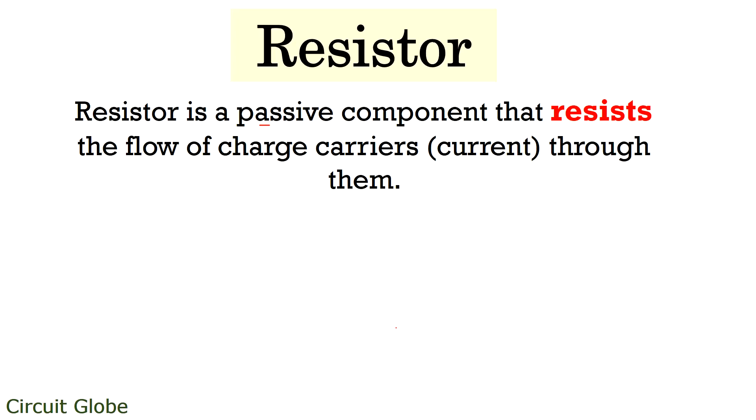A resistor is a passive component that is used to resist or oppose the flow of charge carriers. We all know that movement of charge carriers generates current. So we can say that resistor is a device that resists the flow of current through a device. It is said to be a passive device because it does not contain any power source despite used to reduce the level of voltage or current across it.